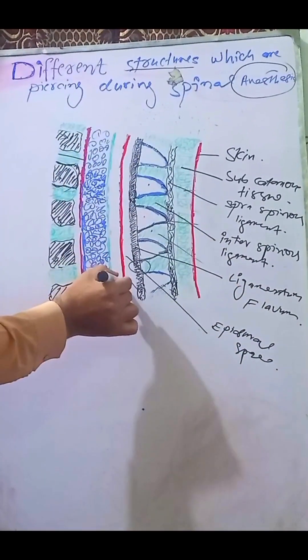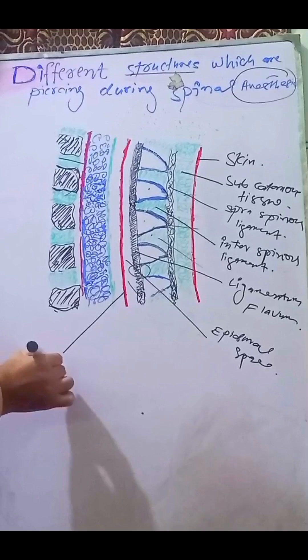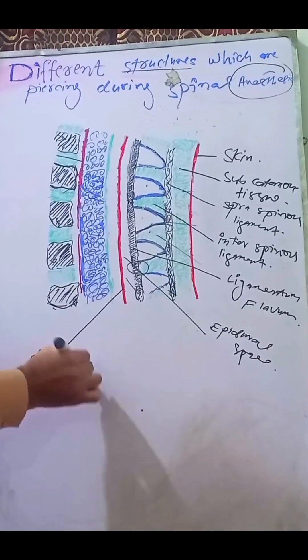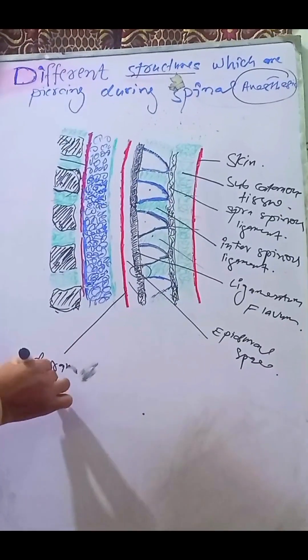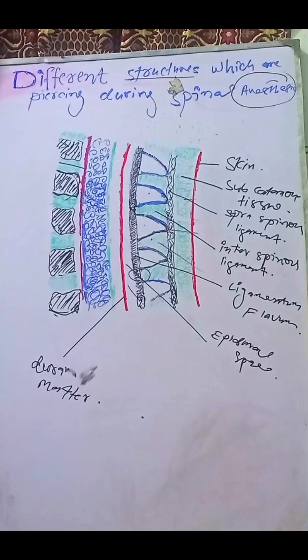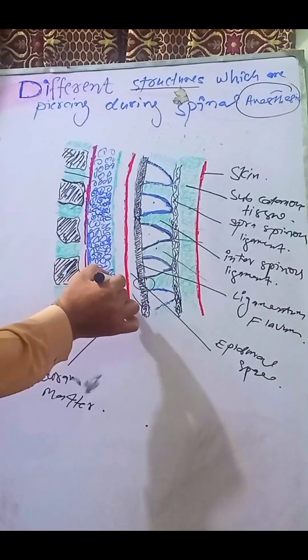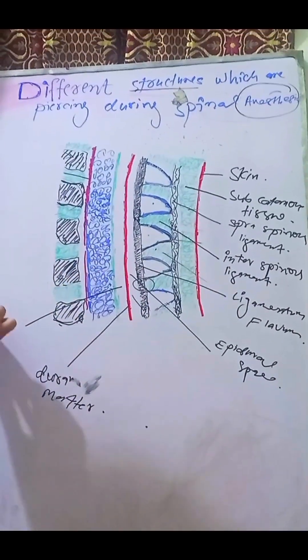The next layer is dura matter. When we cross it, we enter the subdural space.